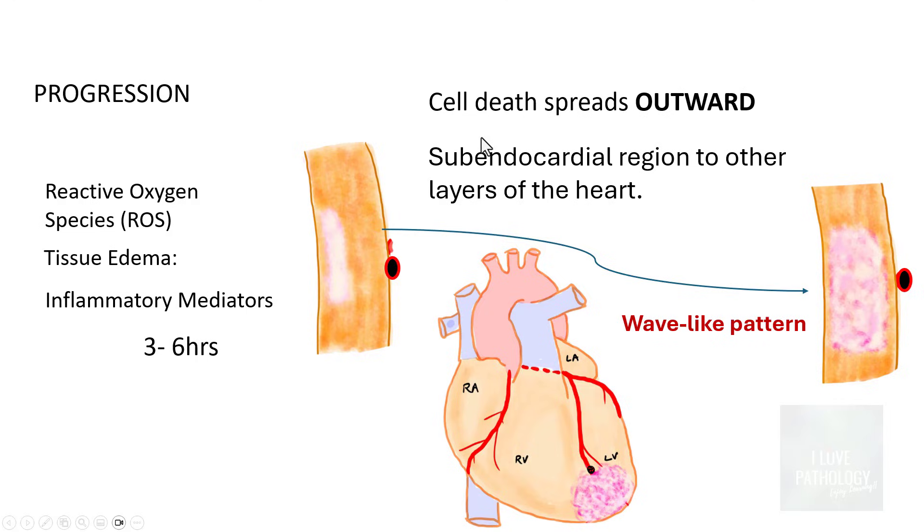The cell death spreads outward from the subendocardial region to the other layers of heart. And finally, there is a full thickness infarct, or it's also referred to as transmural infarct.